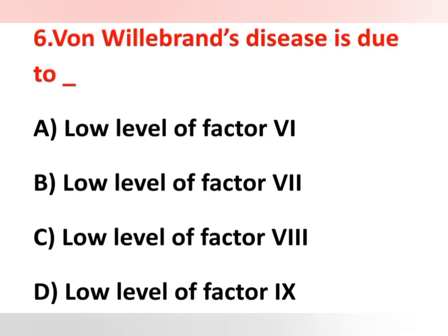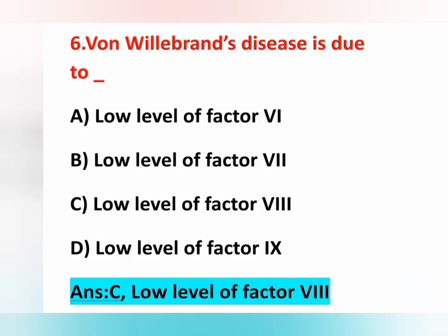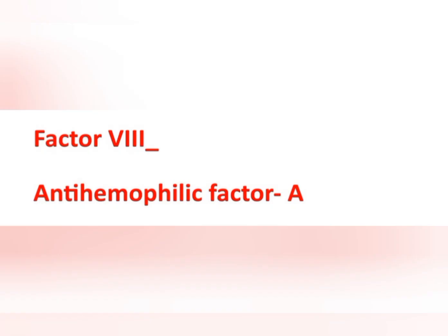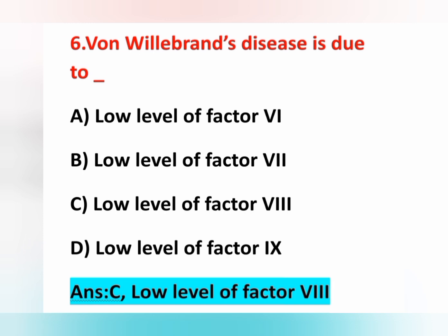Sixth question: Von Willebrand disease is due to? Options are: option A, low level of factor 6; option B, low level of factor 7; option C, low level of factor 8; option D, low level of factor 9. The correct answer is option C, low level of factor 8. Von Willebrand disease occurs due to low level of factor 8, which is known as anti-hemophilic factor A.